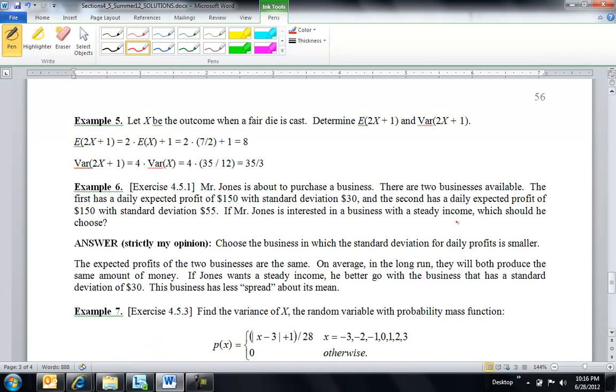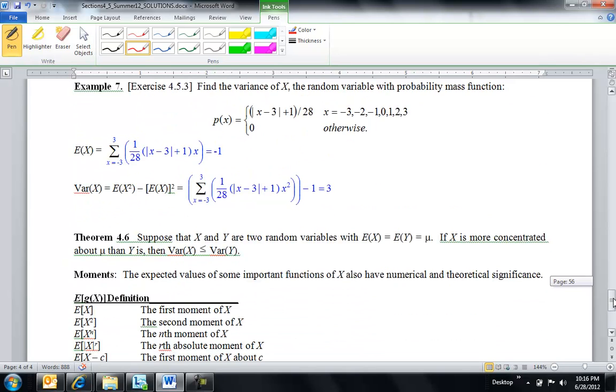If I want the variance of 2x plus 1, that constant's going to come out front squared. So it's 4 times the variance of x, and then the variance of 1 is 0. So just a few more examples, expected value variance, expected value variance. The last thing, we're not going to go another nice theorem. I think that's pretty nice. But moments,